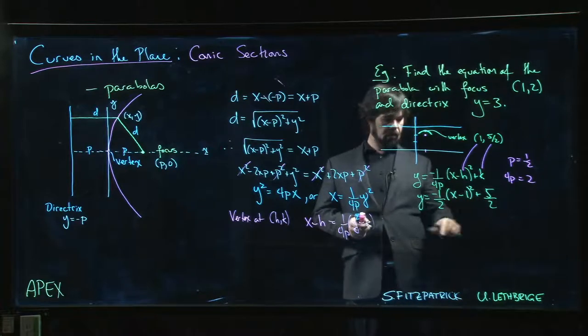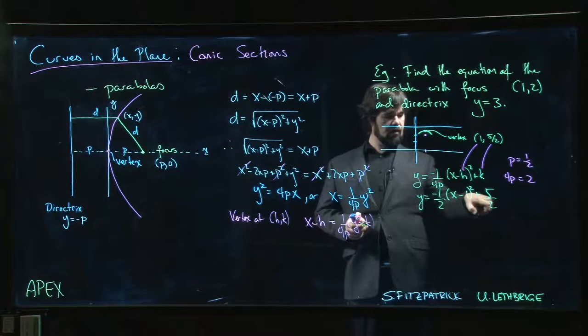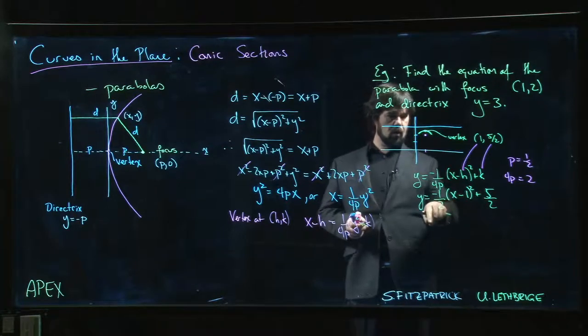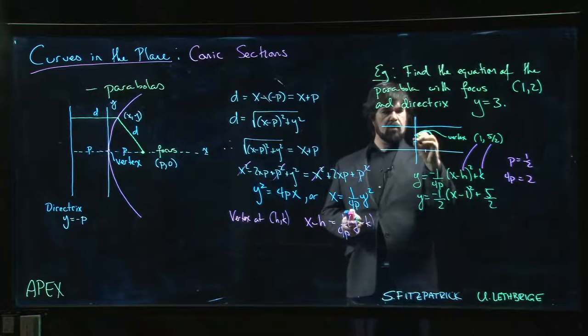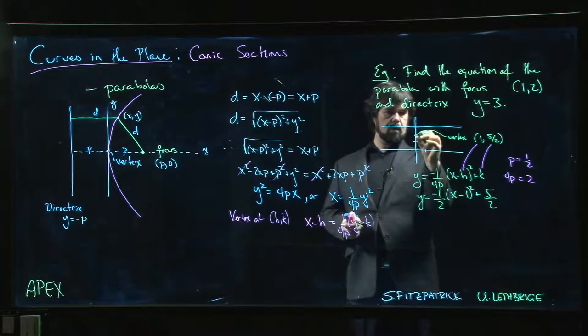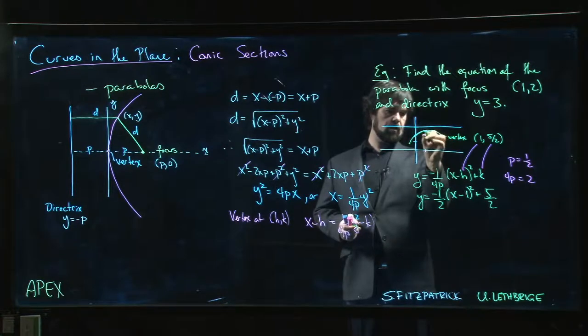Minus sign in there so it opens downwards. We could play around and try to get things like the x and y intercepts. If x is 0, this is 1, 5 halves minus 1 half, we get 4 halves which is 2, so actually it passes through here. We can work that out - there's our parabola opening like that, and same thing on the other side.